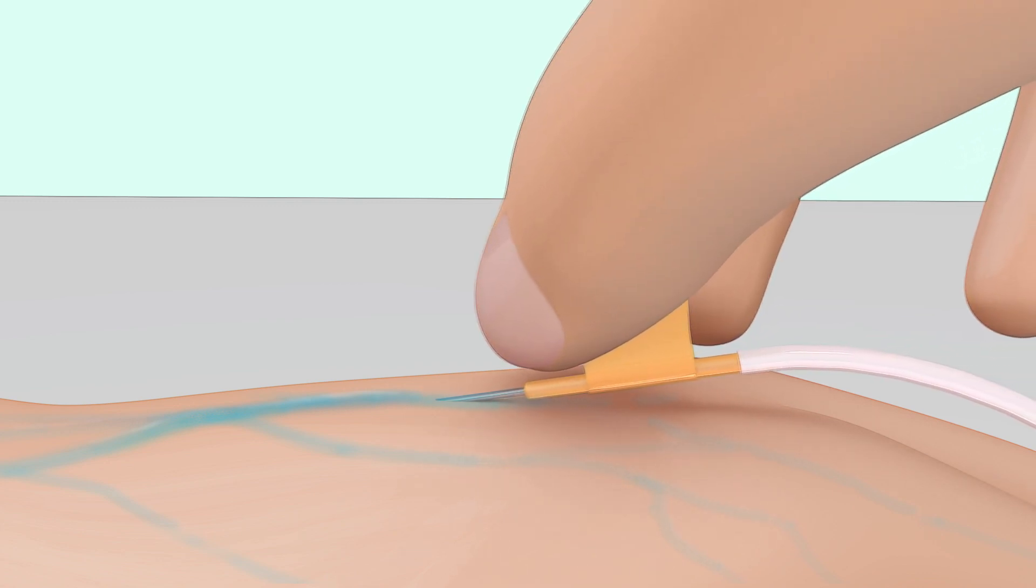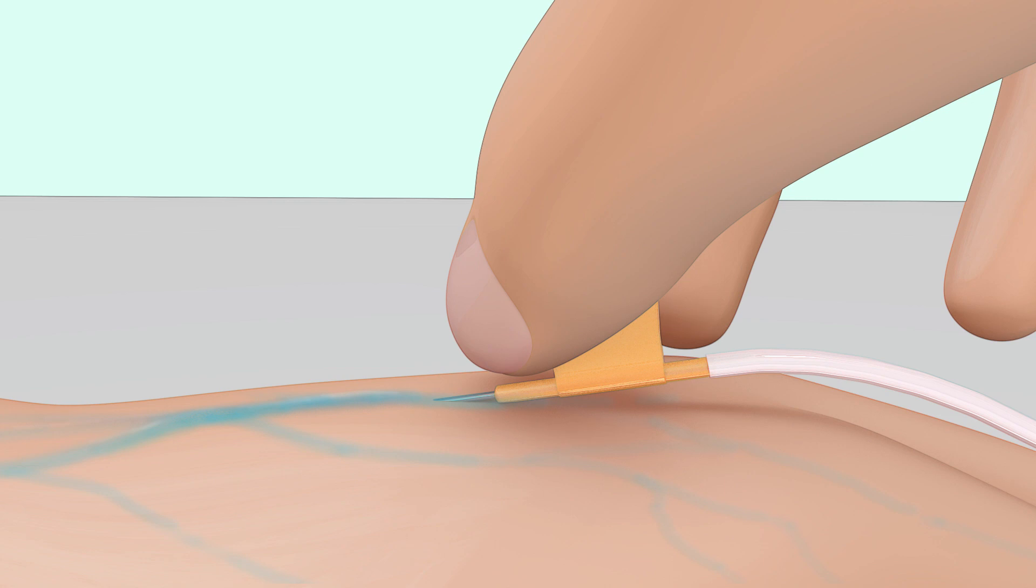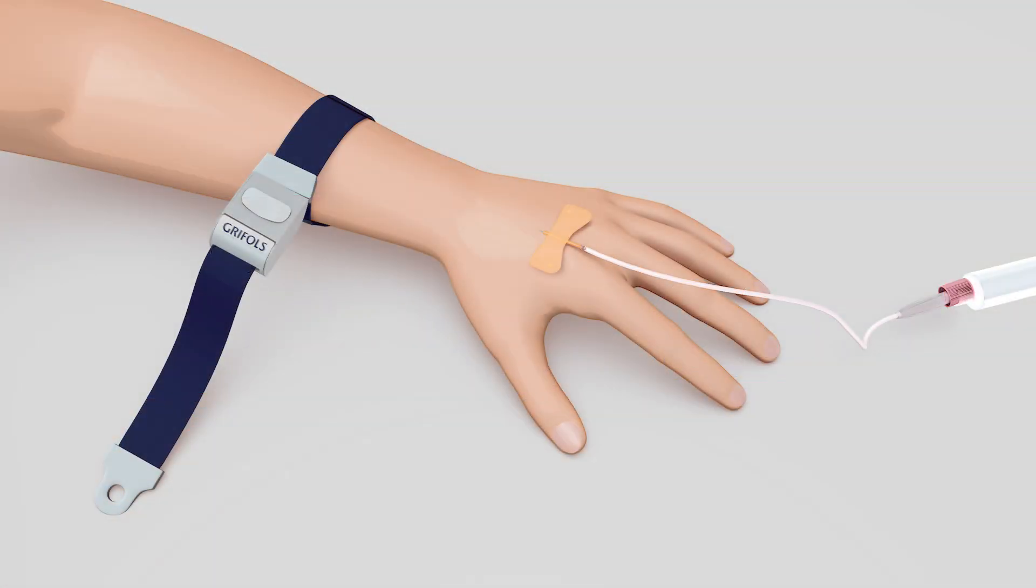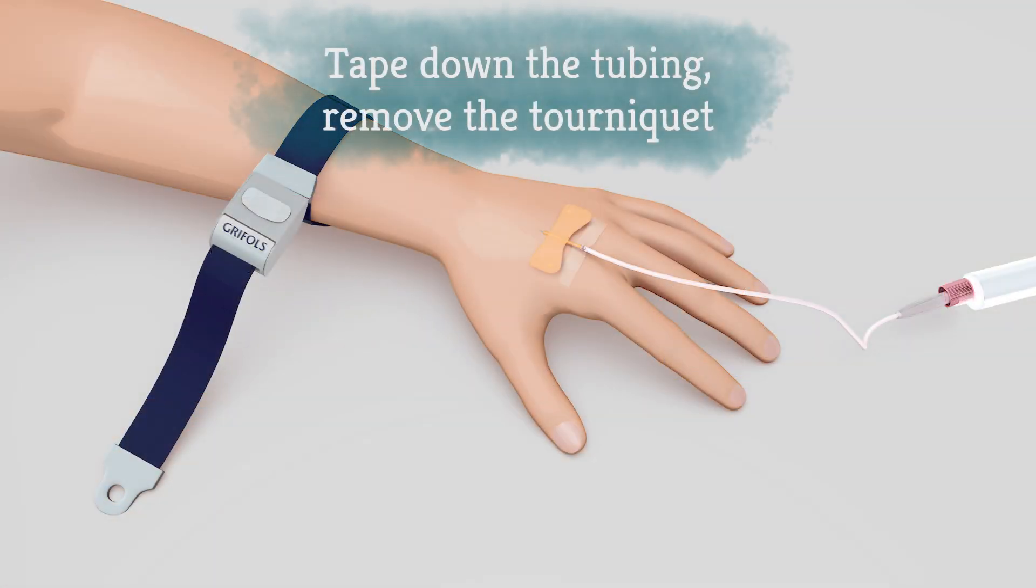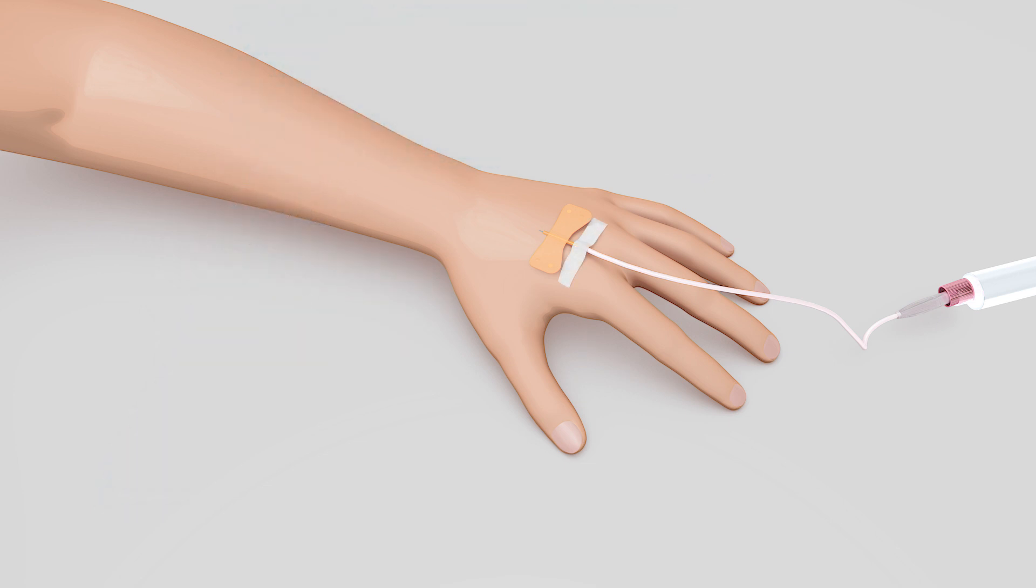Lower the angle of the needle until it is almost parallel with the skin. Don't start injecting the Factor until you see a little blood flow back into the tubing. Once you do, tape down the tubing just below the wings of the butterfly needle and remove the tourniquet.